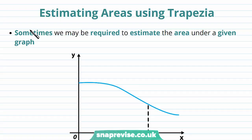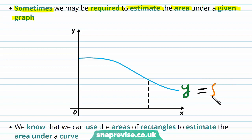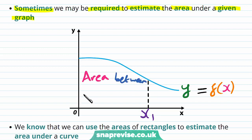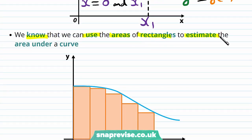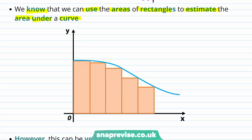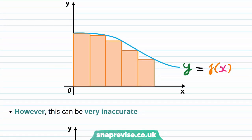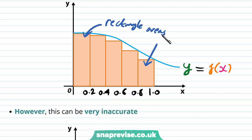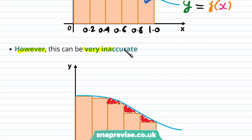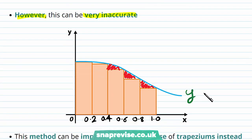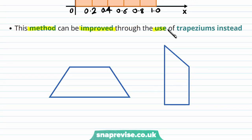So how can we estimate areas using trapezia? Sometimes we may be required to estimate the area under a given graph. Say we have the graph of y equals f of x, and we'd like to find the area between x equals 0 and x equals x1. We know we can use the areas of rectangles to estimate the area under a curve, using x values between 0 and 1 such as 0.2, 0.4, 0.6, and 0.8. However, this can be very inaccurate — quite a bit of area is lost. This method can be improved through the use of trapeziums instead.